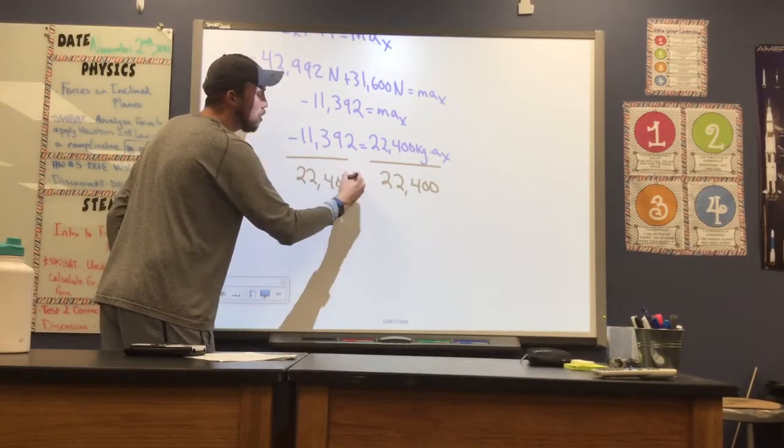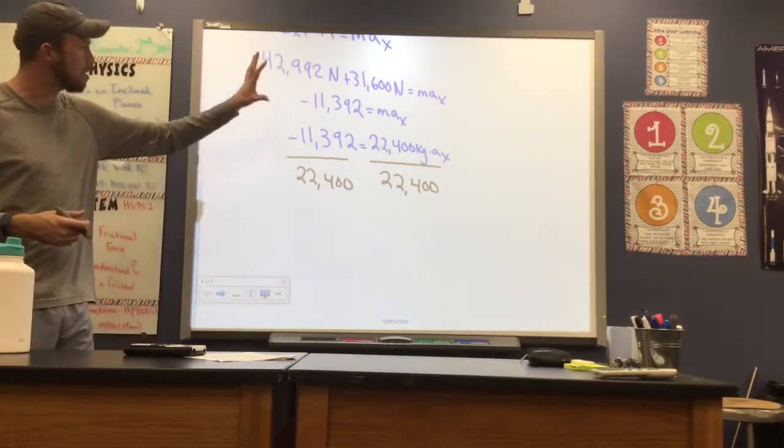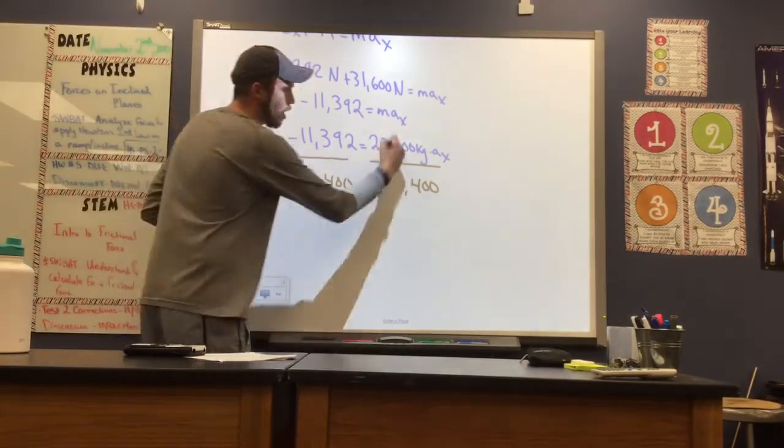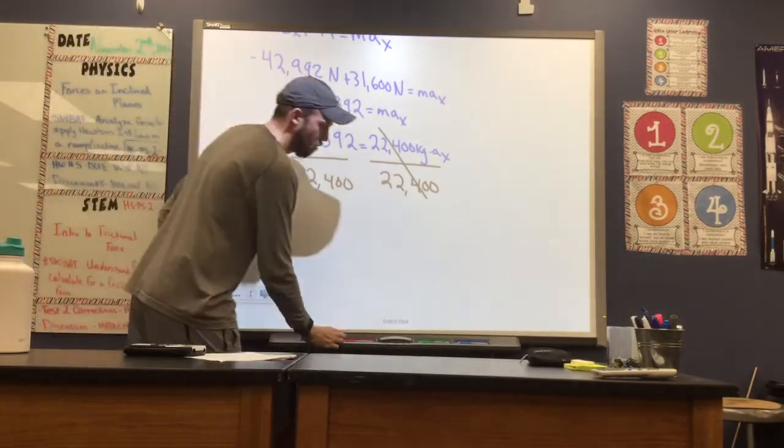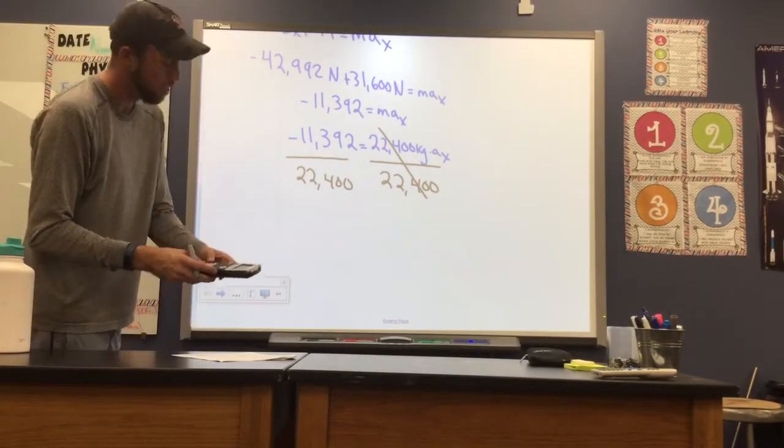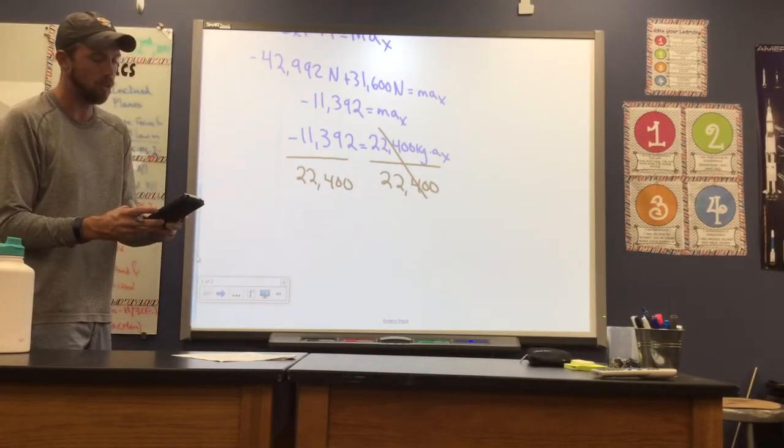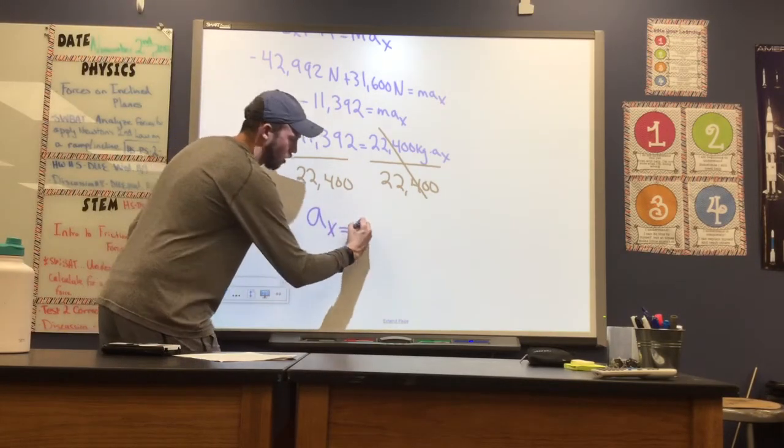You'll notice I've dropped some of the units off here, because we've already made sure to plug in the units that we need, newtons and kilograms. So this is going to give us a way to find our acceleration in the X direction. So I'll take negative 11,392, divide by our mass, 22,400.